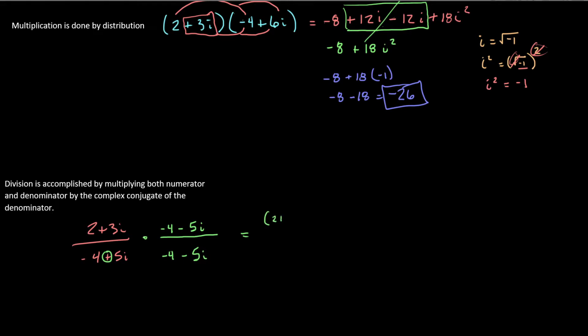So, we're going to have to do these two multiplications. We're going to multiply 2 plus 3i by negative 4 minus 5i. If we do that, that's going to give us negative 8, and then we have negative 10i and negative 12i, and then we have this negative 15i squared.